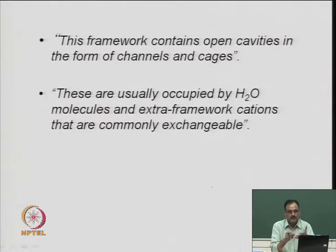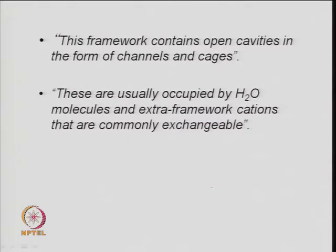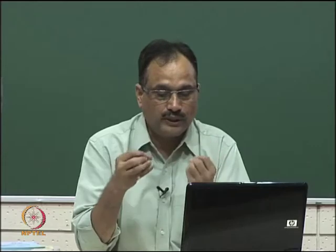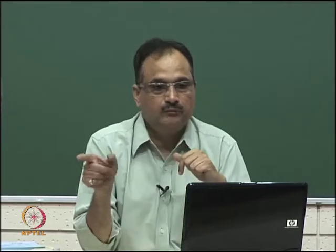Acid concentration decreases as the silicon-to-aluminum ratio increases, because adding more aluminum provides more electronegativity. To increase acid concentration, one must de-aluminate. Acid strength also depends on the presence of aluminum in the framework — strength is the ability to react with a base, which relates to Brønsted-type and Lewis-type acidity.